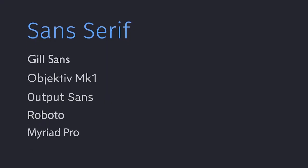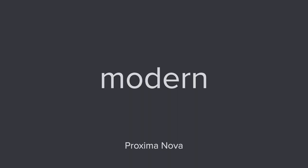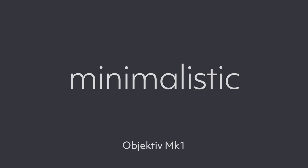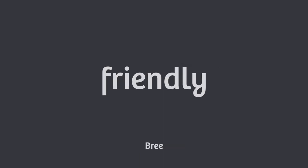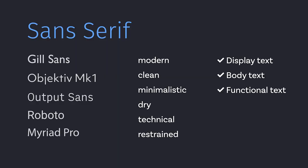Starting with sans serif. Some popular examples you see here, like Gilroy, Roboto, or Myriad. They might be perceived as very modern, clean, minimalistic, but they could also be dry and technical. You basically could use a sans serif for any kind of text in the category, but it will always depend on the typeface, of course.